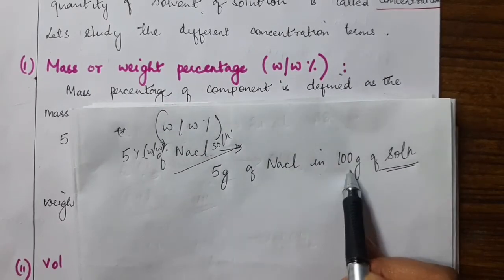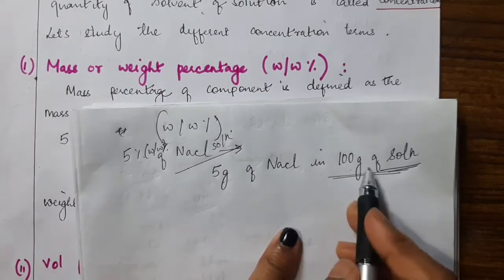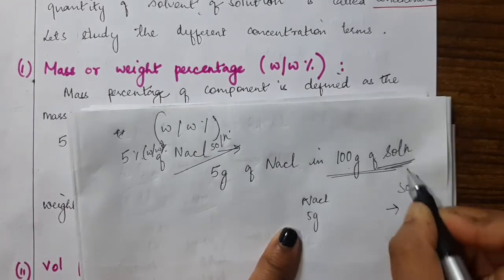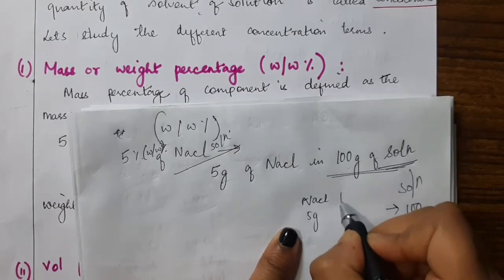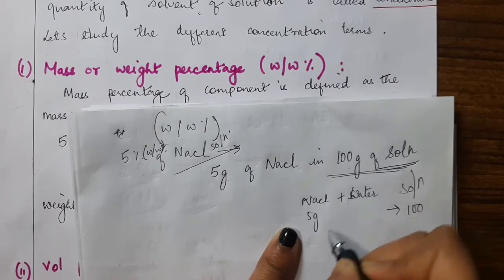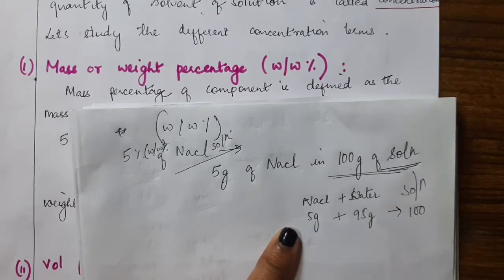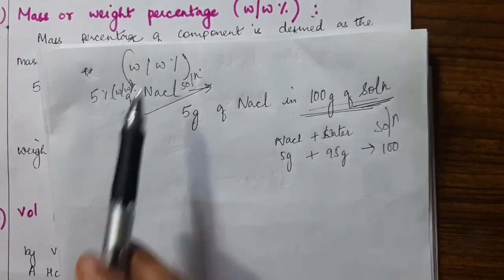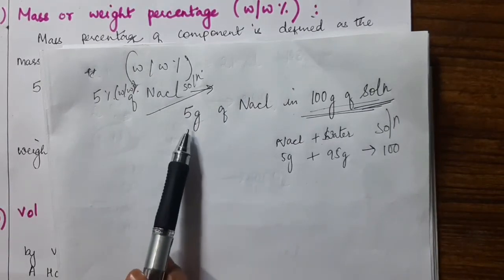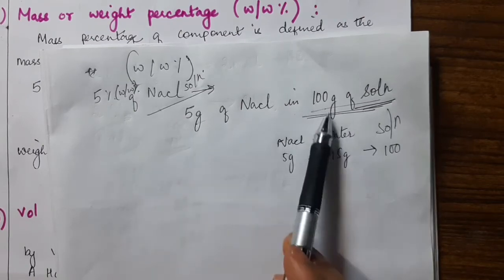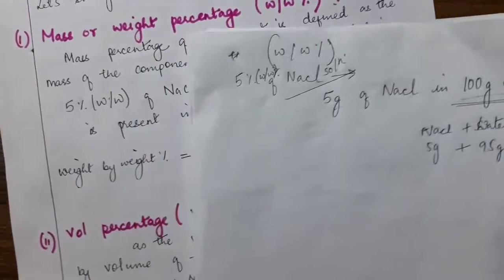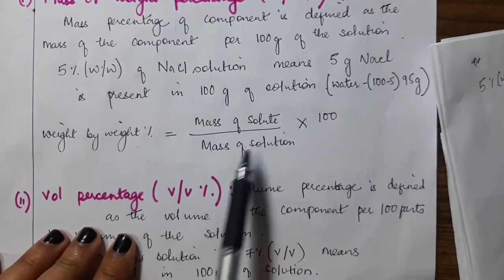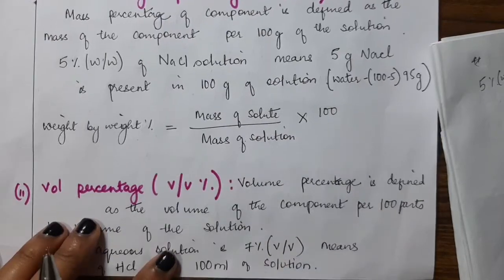Both values are weights — this is weight by weight. Weight by weight percentage tells you the amount of solute in grams per 100 grams of solution. The formula is: W/W% = (mass of solute / mass of solution) × 100.